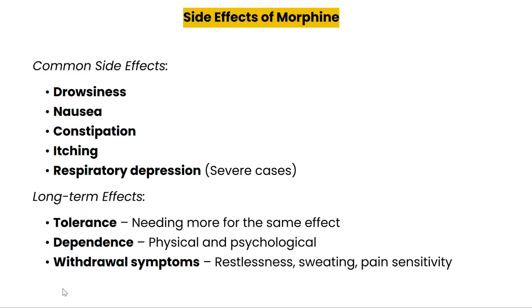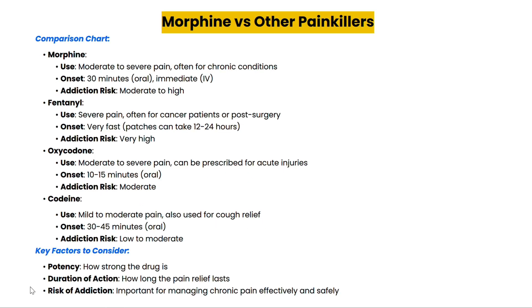When you are faced with severe pain, it's crucial to understand the options available to you. Morphine is effective for many, but it's not the only choice, and each medication has its own benefits and risks. For instance, while fentanyl is much stronger, it also carries a higher risk of addiction and overdose, making it suitable mainly for those in severe pain or undergoing major surgeries. Always consult your healthcare provider to determine the best pain management strategy for you, as personalized care is key.